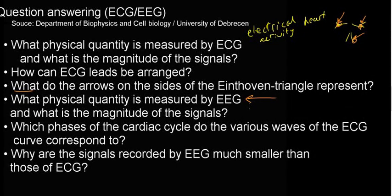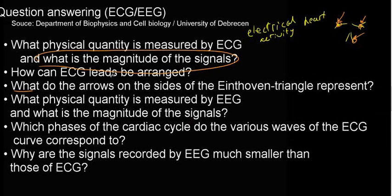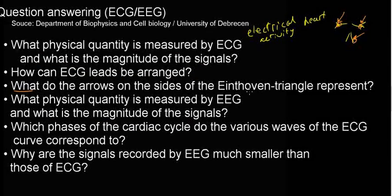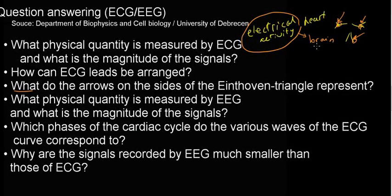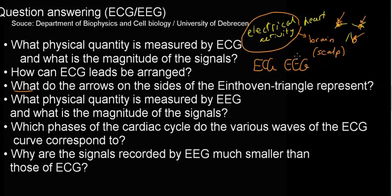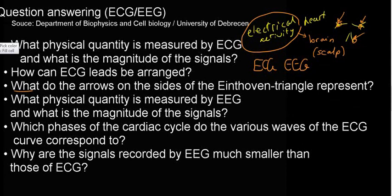Question four: what physical quantity is measured by electroencephalography, and what is the magnitude of the signals? Electroencephalography measures the electrical activity of the brain, measured from the scalp on top of the cranium. Regarding magnitude: EEG signals are considerably lower than ECG signals for two reasons. First, neurons fire in every which way, so they're not orchestrated and may cancel each other out. Second, there's the shielding effect of the skull. For these reasons, electrocardiogram has considerably higher magnitude readings than electroencephalography.